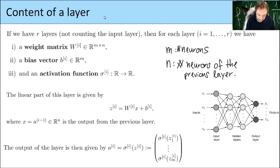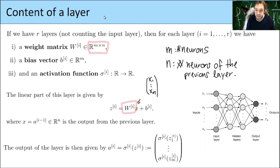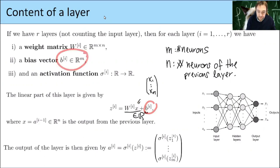The linear part is calculated by taking the values of the layer before. In this picture, we have n values x1 up to xn — this is a vector. We look at the first layer and multiply this vector with the weight matrix, which we can do because it is an m-by-n matrix. This gives a vector of size m. To this vector we add at each component the bias, which is also a vector of size m, giving a vector of size m — the linear part, usually denoted Z.